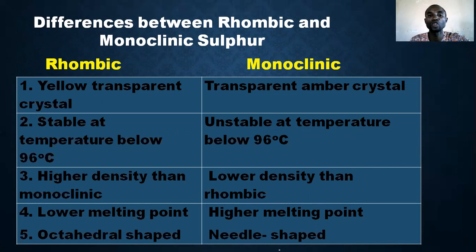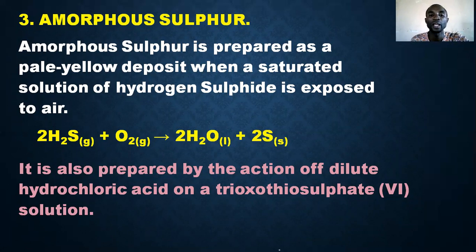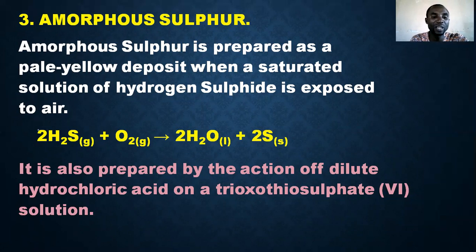The next allotrope is amorphous sulfur. It is prepared as a pale yellow deposit when a saturated solution of hydrogen sulfide is exposed to air. When hydrogen sulfide reacts with air, sulfur is deposited in this amorphous form.